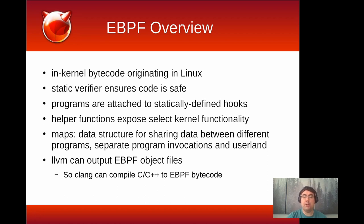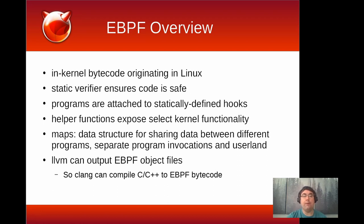Another analogy is dtrace. In dtrace, we have static probes in the kernel — function boundaries, scheduler probes, net probes — and when that event happens, the probe fires and you can have a dtrace program run with information about that event. The difference is that in dtrace, that is basically a read-only operation — it's for introspection — whereas eBPF can, in a limited manner, change the behavior of the kernel.